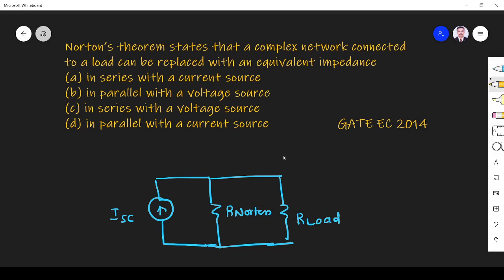So any complex network can be equally represented by a current source in parallel with resistance, where the current source has a value of short circuit current through the load and the equivalent resistance is given by Norton resistance. So option